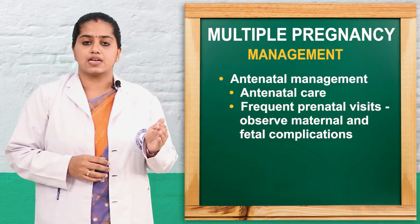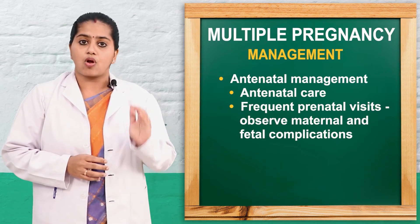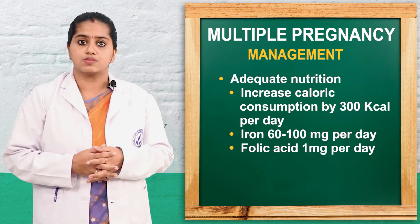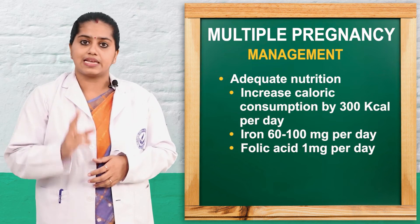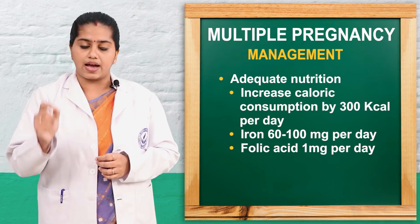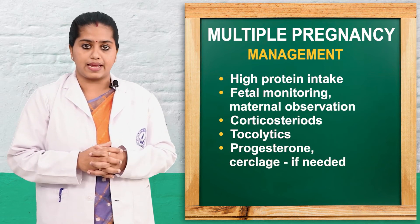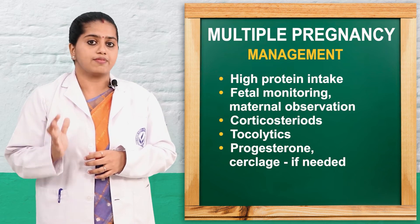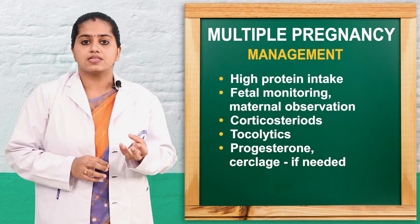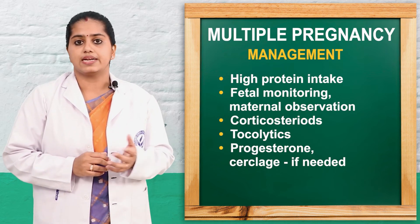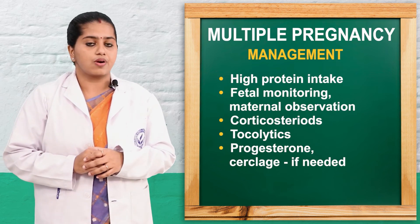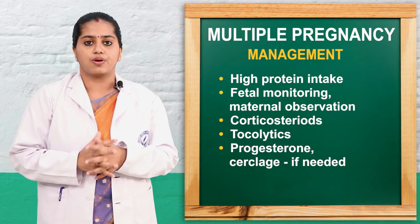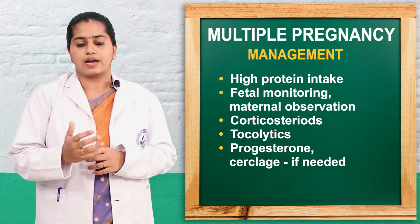Next we will discuss management. In the antenatal period: proper screening of the pregnant women, proper antenatal care, advice for regular follow-up visits, and diet counselling must be given, as the pregnant mother has higher demands during multiple pregnancy. She needs 300 kilocalories extra in diet, 60 to 100 mg of iron, 10 mg extra folic acid, and high protein. If needed, hospitalization for high-risk pregnancy, fetal and maternal monitoring, and close observation must be done. After 30 weeks, corticosteroids can be given to increase lung maturation. Cerclage and progesterone therapies can be done to sustain the pregnancy as per physician order.